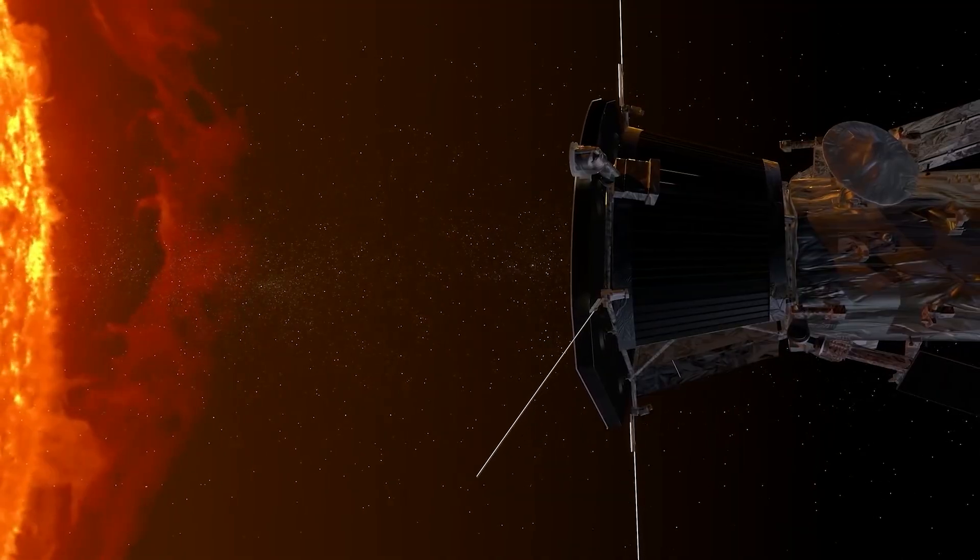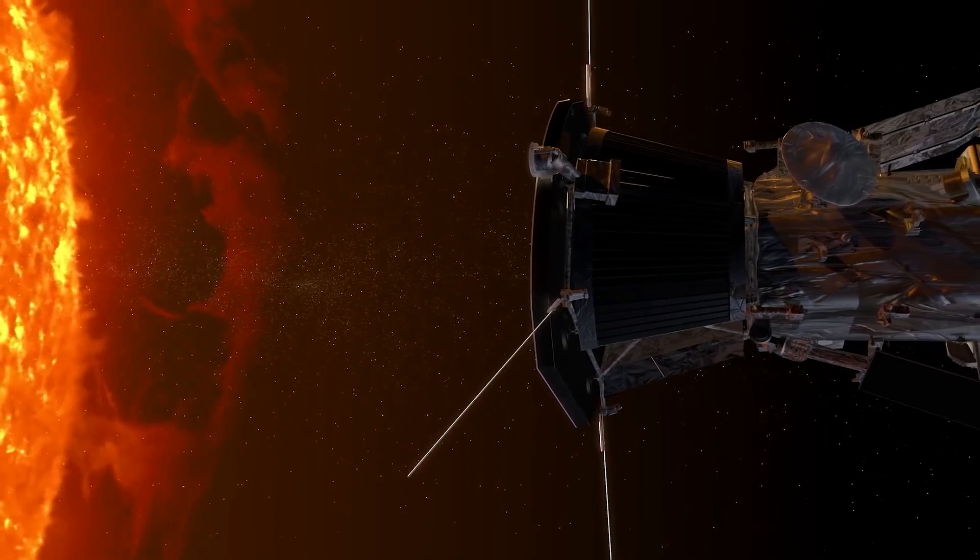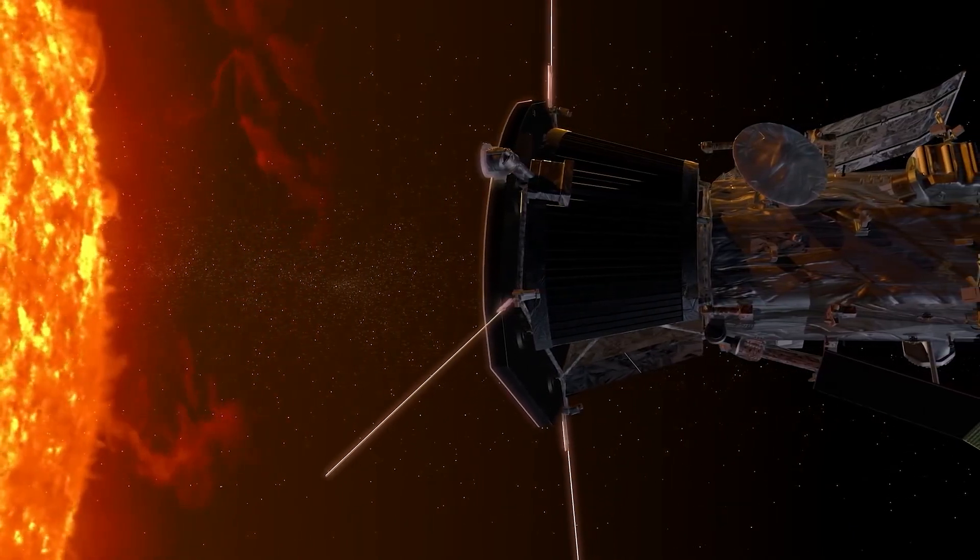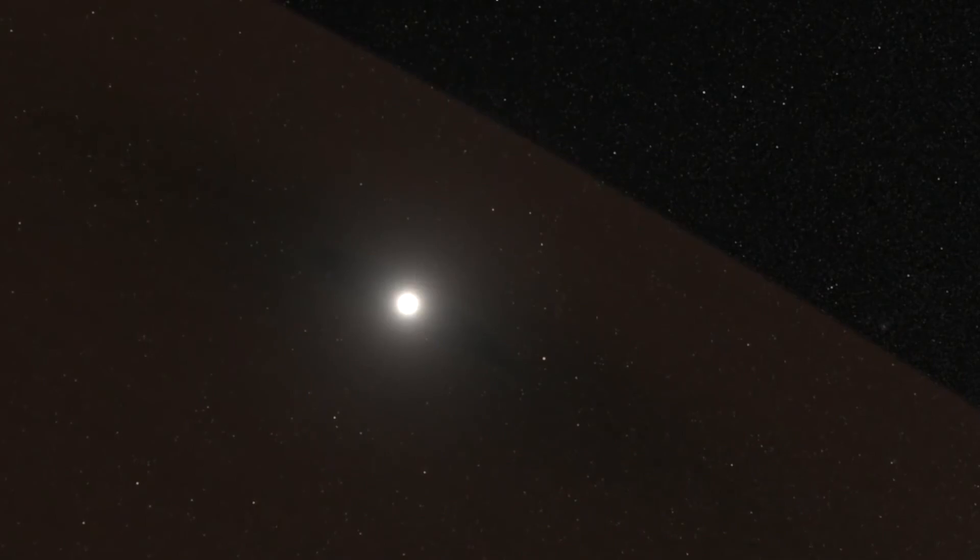At that speed, one could get from Los Angeles to New York City in just 20 seconds, but it would take the solar probe about 6,633 years to reach Earth's nearest neighboring solar system.